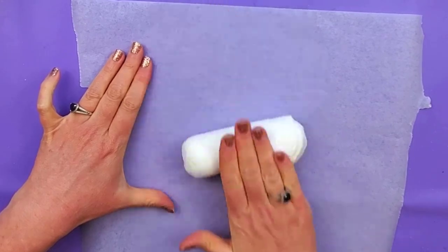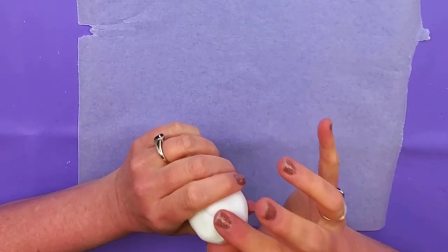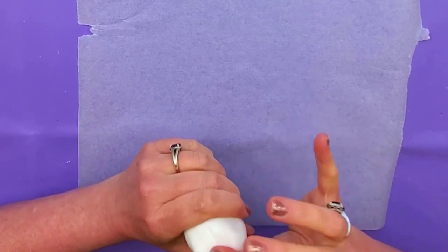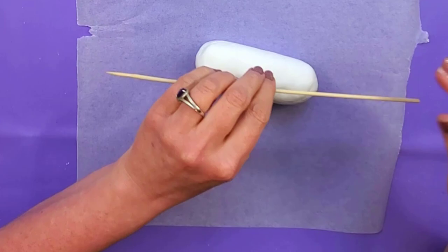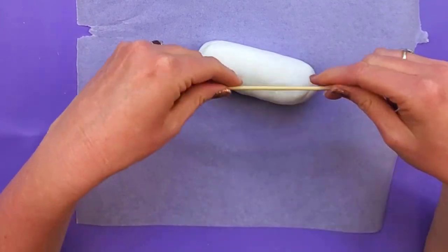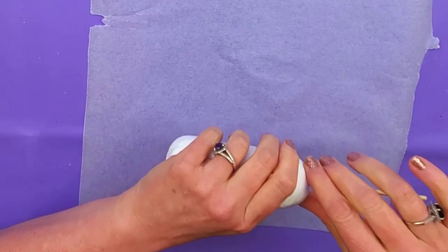I want to smooth out all the creases and things like that. We want this to be nice and smooth. So I have a skewer here. I'm gonna just break it in half—I don't need this whole length—so I'll just stick that in one end there.